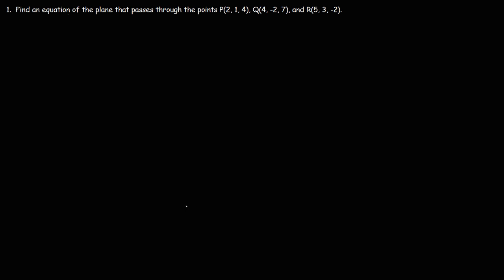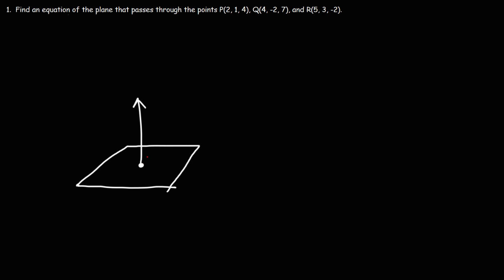In this video, we're going to talk about how to find the equation of a plane given three points. In order to write the equation of a plane, or to define any plane for that matter, we need a point on the plane and a vector that is perpendicular to the plane. That vector is known as the normal vector.